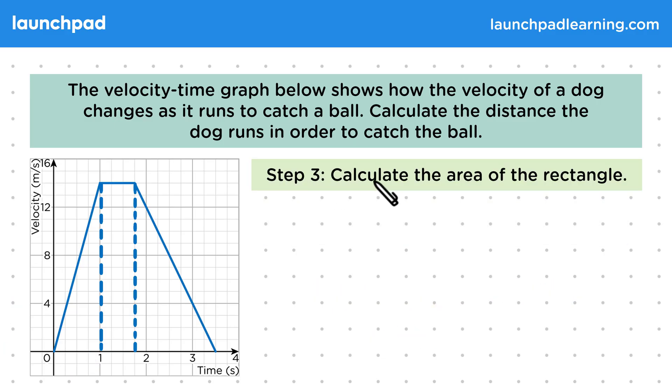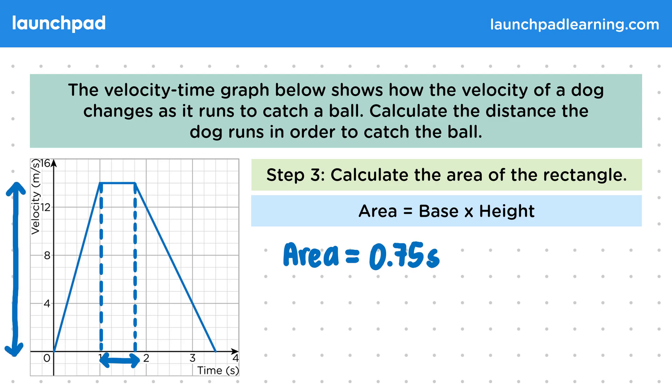In step 3, we need to calculate the area of the rectangle. This time we'll be using the formula area is equal to the base multiplied by the height. So we have that the area equals, and then the base is the change in time, which is 0.75 seconds, and the height is the velocity, which is 14 metres per second. This means that the area of the rectangle is 10.5 metres.